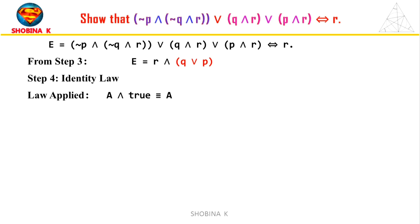Next, we use the identity law to simplify the expression further. This law states that A and true is equivalent to A. That is, if A is true, the whole expression is true. If A is false, the whole expression is false.